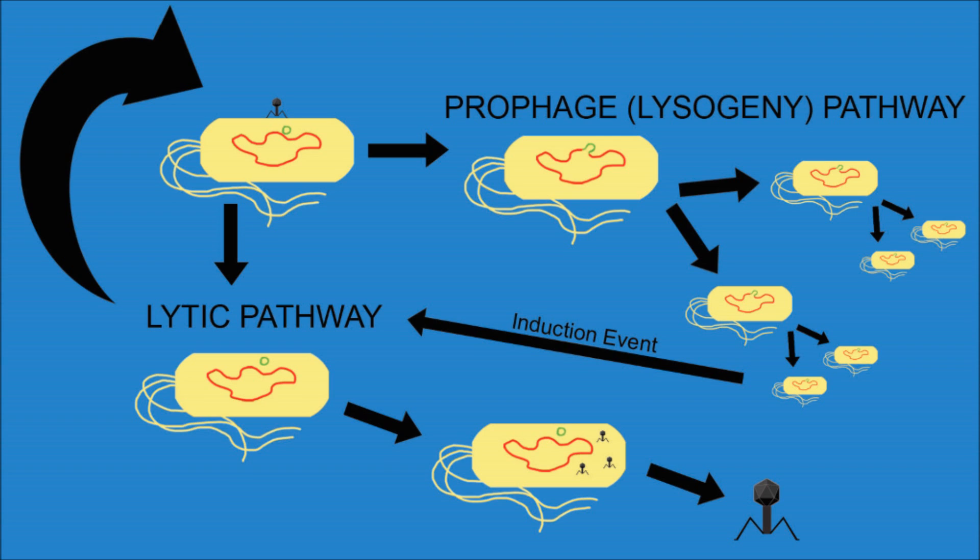However, don't think the bacterium in the prophage pathway got away so easy. That virus is a ticking time bomb. Someday, in one of the E. coli's babies, an induction event will cause a shift to the lytic pathway. What is an induction event? It is when the host cell responds to DNA damage.